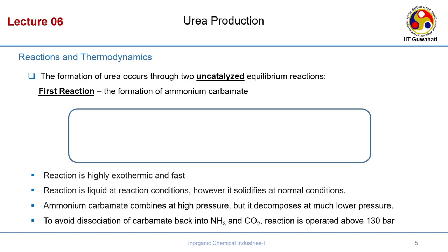The formation of urea occurs through two uncatalyzed equilibrium reactions. The first reaction is the formation of ammonium carbamate: 2NH₃ + CO₂ ⇌ H₂NCOO⁻NH₄⁺ (ammonium carbamate). This reaction is pretty fast and also exothermic — ΔH at 298 K is approximately −159 kJ/mol.